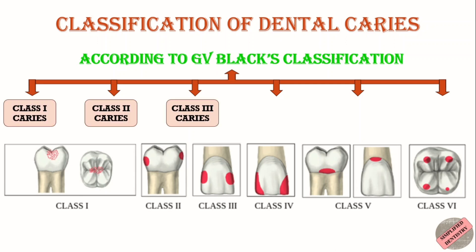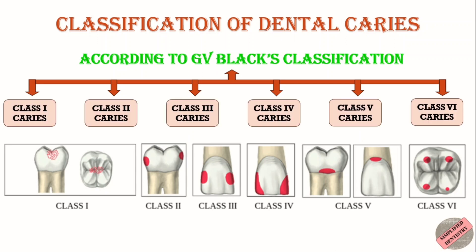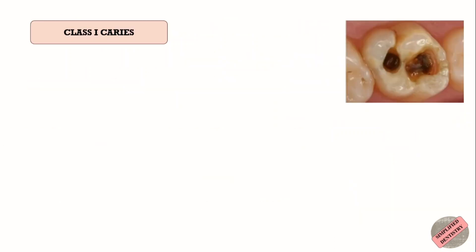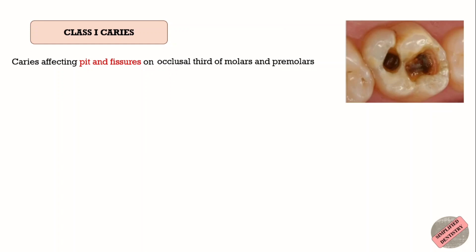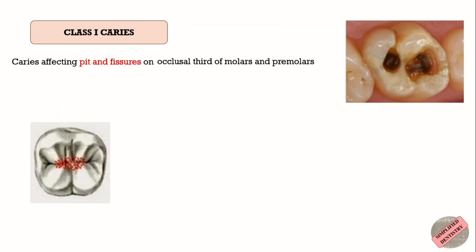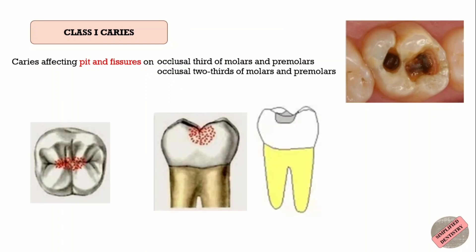Class 1 caries is the caries affecting pits and fissures on the occlusal third and occlusal two-thirds of molars and premolars, and also on the lingual part of the anterior teeth.